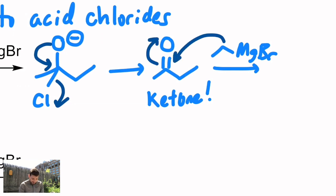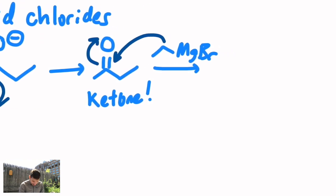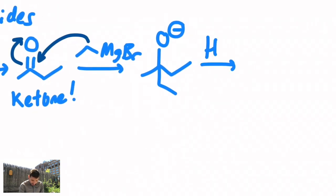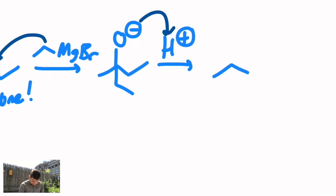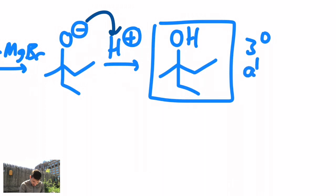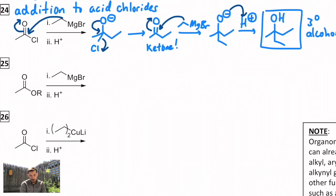But maybe it's what you want. Now we have a second equivalent of the same Grignard attacking ketone. I get to the oxygen anion and that's what sits around waiting for your aqueous workup to come in and you get a tertiary alcohol. So acid chlorides plus Grignards will always give you a tertiary alcohol. You can't stop it.